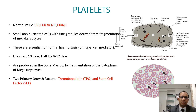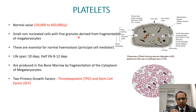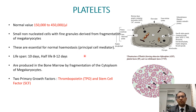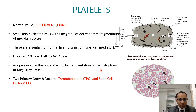What are platelets? The normal value is 1.5 to 4.5 lakhs. They are small non-nucleated cells with fine granules derived from fragmentation of megakaryocytes — essentially a pinching effect where they are removed from the megakaryocyte. They are essential for normal hemostasis, are a principal cell mediator, and have a lifespan of around 9 days with a half-life of 8 to 12 days. They are produced in bone marrow with two primary growth factors: thrombopoietin and stem cell factor.